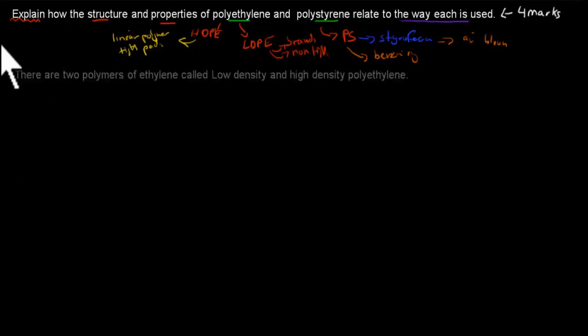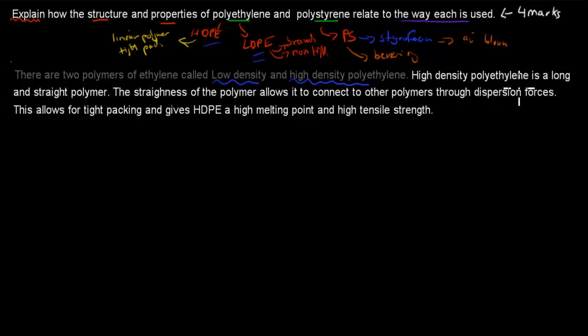What I wrote first is there are two polymers of ethylene called low-density and high-density polyethylene. I chose to start with high-density polyethylene. High-density polyethylene is a long and straight polymer. I could have also said linear polymer. The straightness of the polymer allowed it to connect to other polymers through dispersion forces. This allows for tight packing and gives high-density polyethylene a high boiling point and high tensile strength.